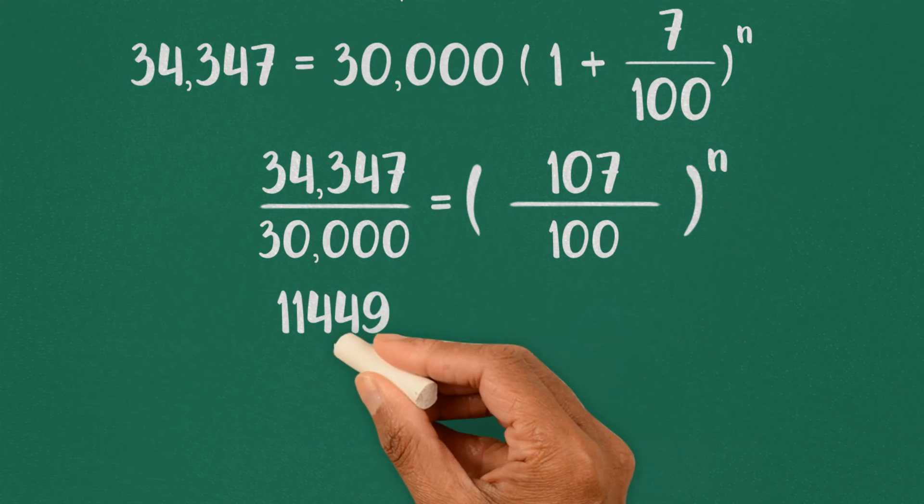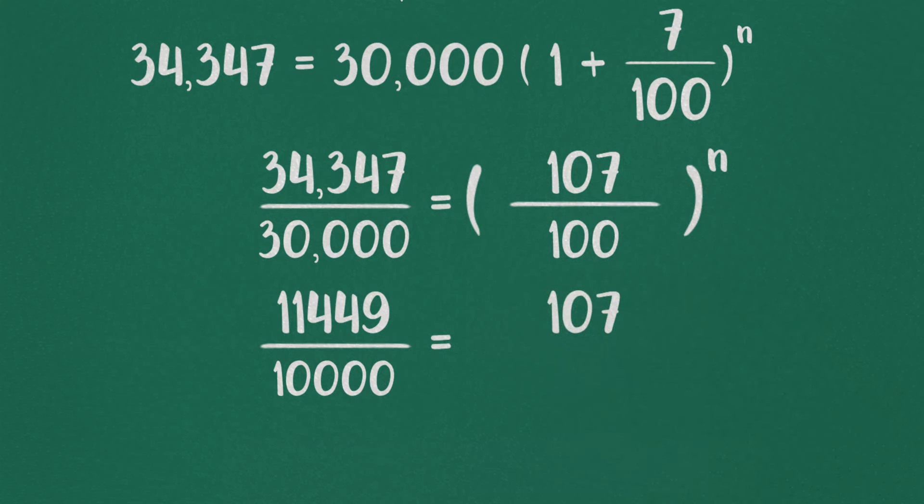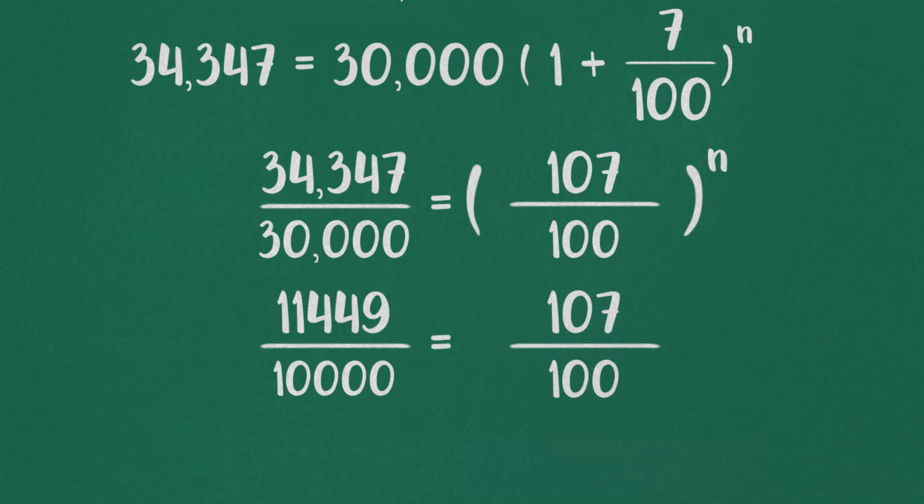So, taking out common factors, 11,449 by 10,000 equals 107 divided by 100.